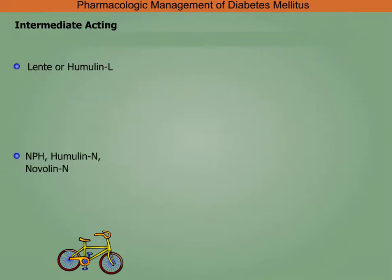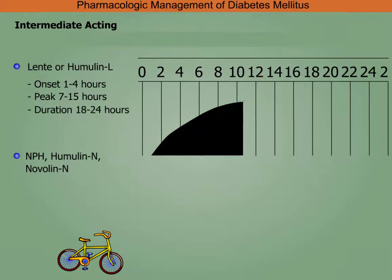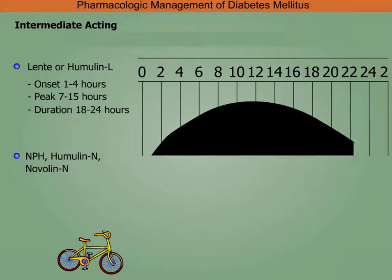Intermediate-acting Lente (Humulin L) has an onset in one to four hours, peaks in seven to 15 hours, with a duration of 18 to 24 hours.